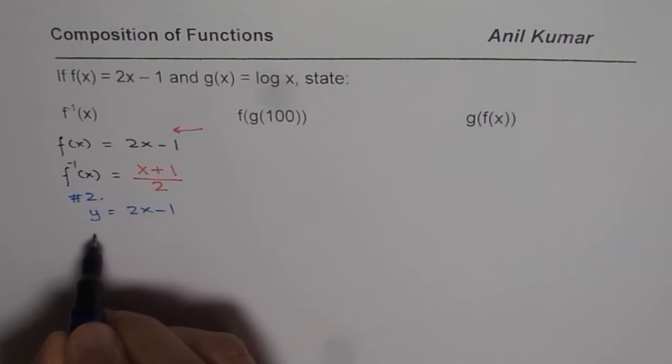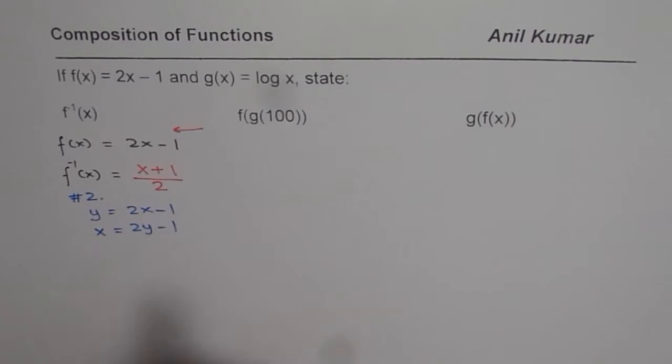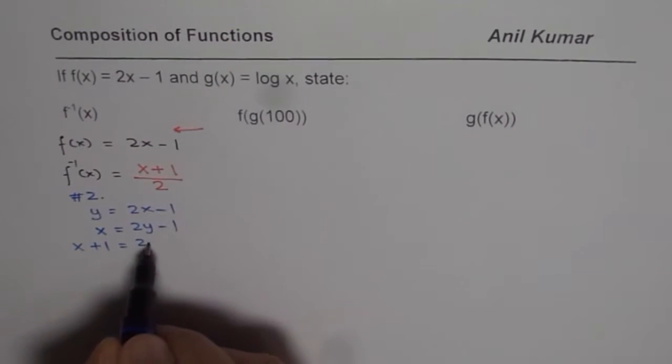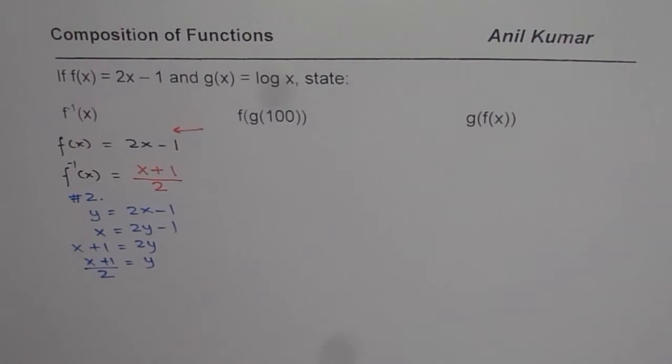We write x equals 2y minus 1 and then isolate for y. So we get x plus 1 equals 2y or y equals x plus 1 divided by 2. We get the same answer.